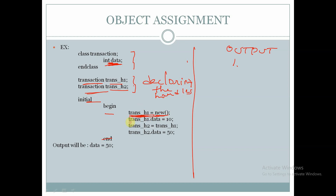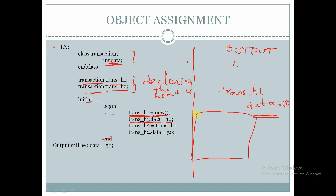We are assigning the value of data using the trans_h1 handle and assigning it a value of 10, so trans_h1.data will be equal to 10. Memory for trans_h1 is created and the variable data stores a value of 10.